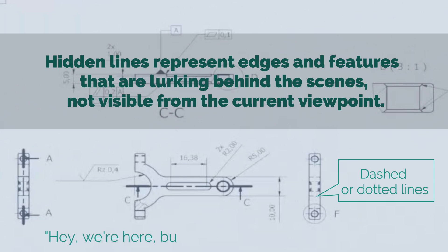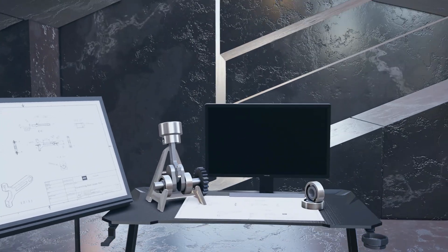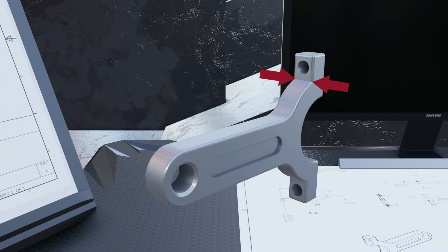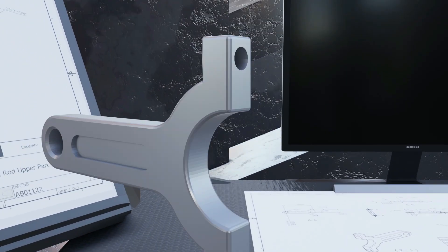It's like they're saying, hey, we're here, but you might not see us right away. For example, this edge marked in red is not visible if we look at the connecting rod from this side.